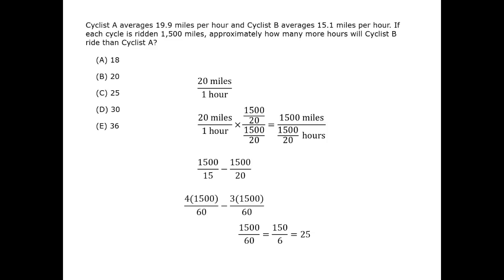Then we can drop the 0s, divide by 6, and we get an answer of 25. 25 is our estimate for how many more hours it will take cyclist B to travel. That estimate is one of the answer choices. The correct answer is C.